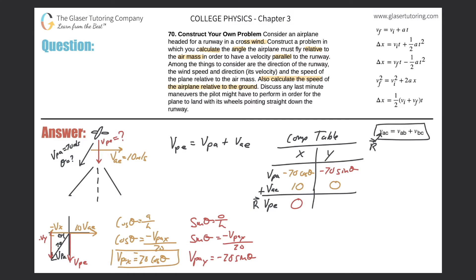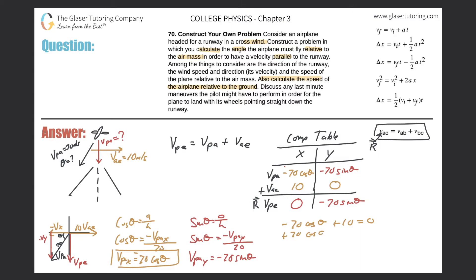The y component of V_PE is unknown for now. We add the x and y components up to equal the resultant. The y sum is just negative 70·sin(theta). For the x equation: negative 70·cos(theta) + 10 = 0. I now have one equation with one unknown — I can solve for theta.